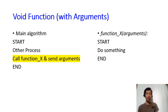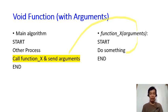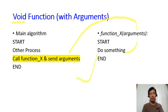The second type of function we saw last week is the void function with arguments. Here we are sending some information that the function will use in its process, and then the function ends. It is still called a void function because it does not return anything to the main algorithm.